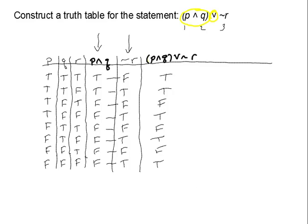So there you see that my last column is my answer column, and I'm going to circle it for you so you can see it. And that is how you do a truth table when there are three statements. Good luck on your homework — let me know if you need any help.